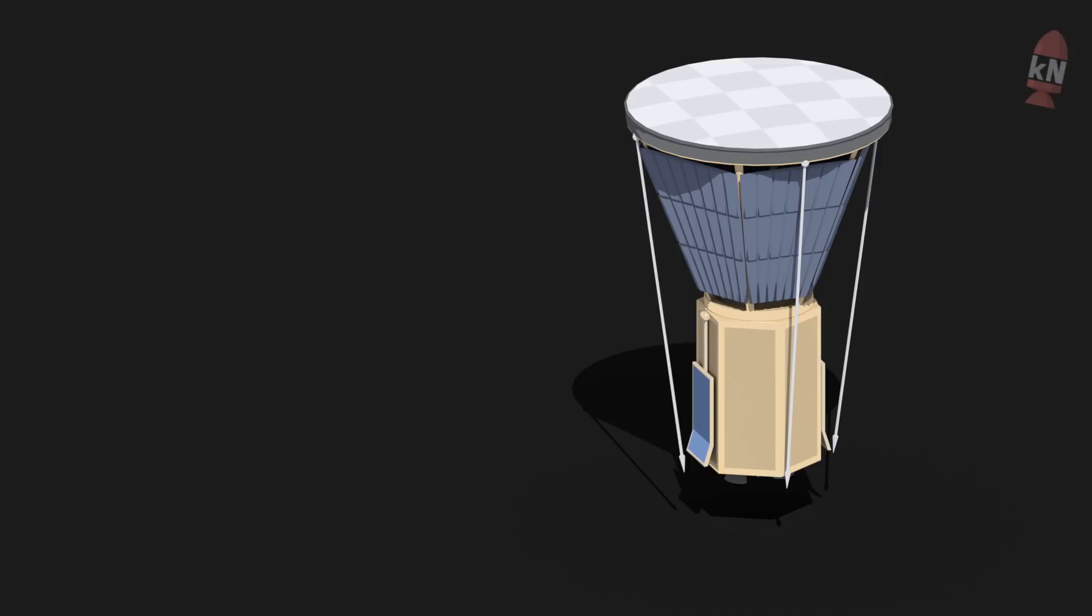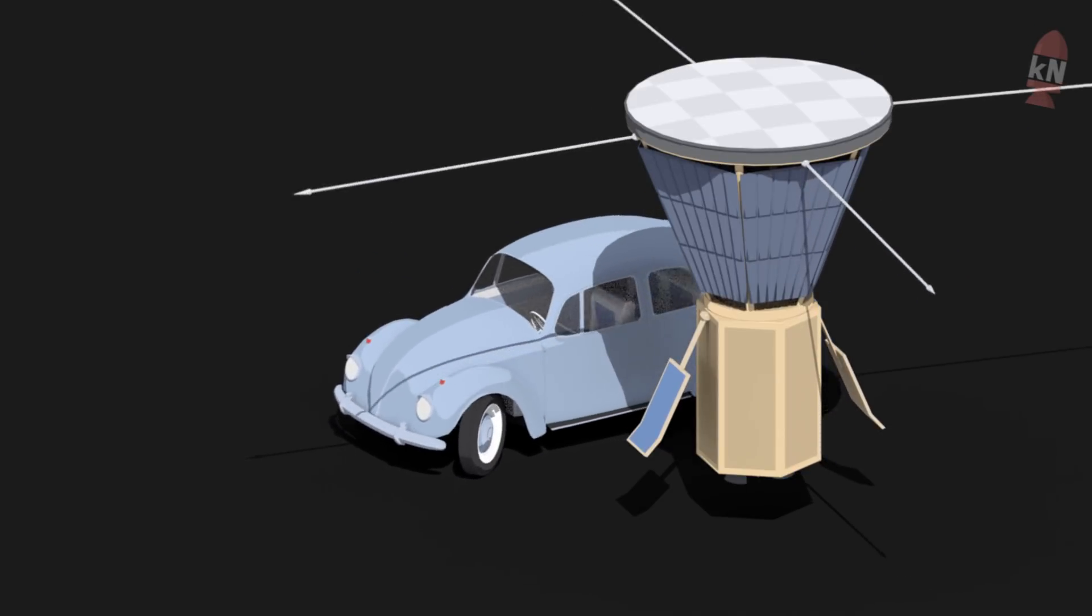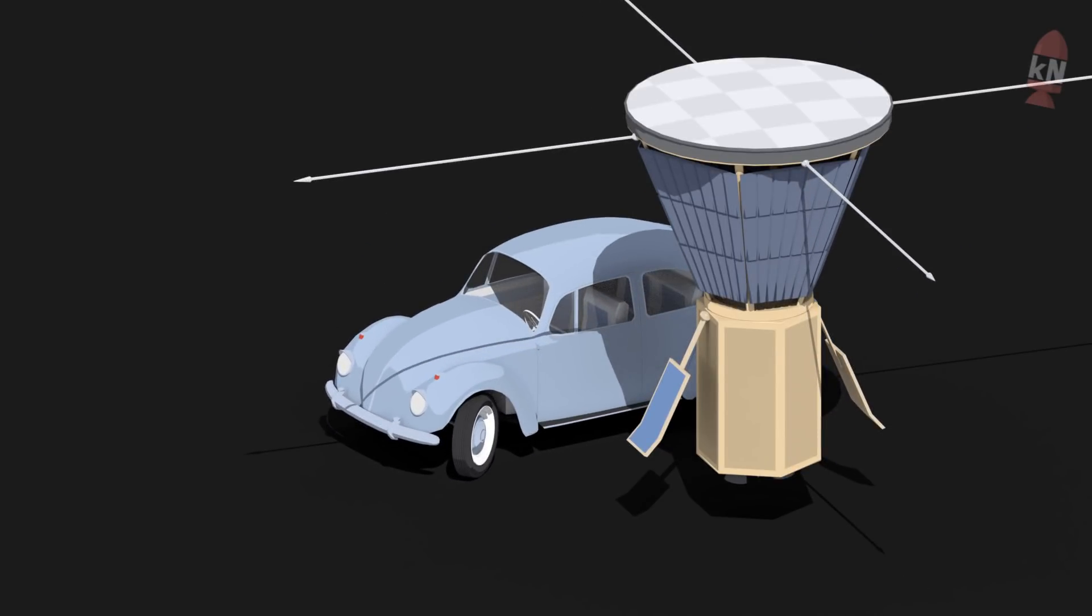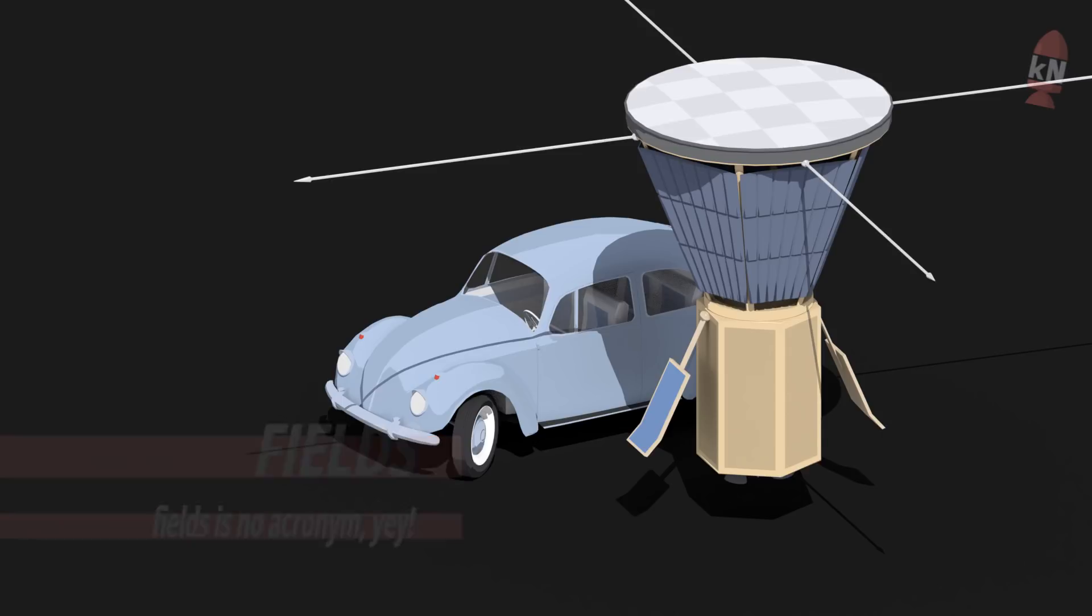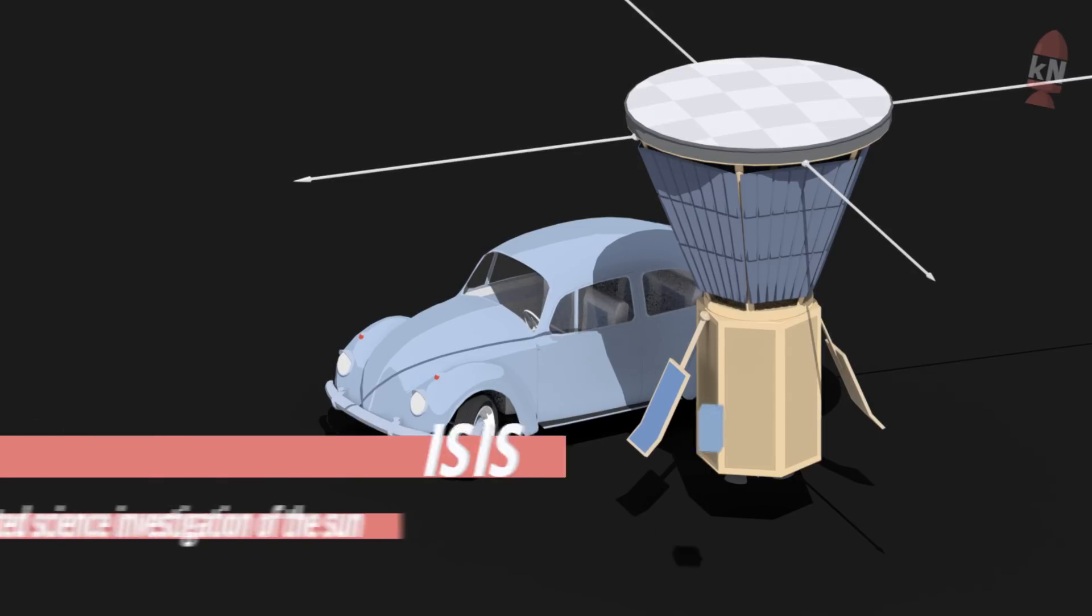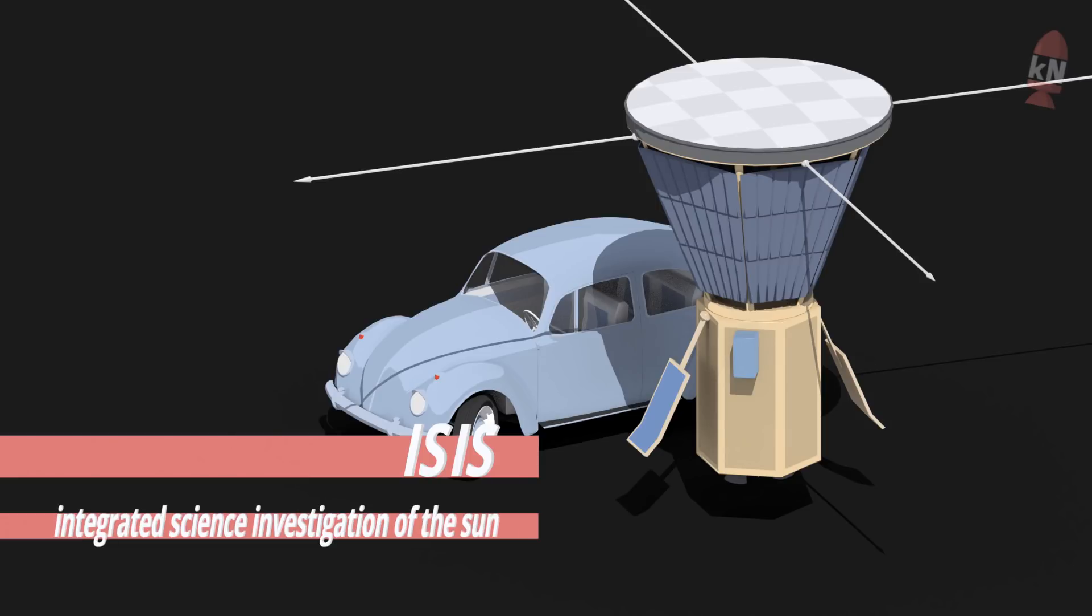To give you a little overview about what it is the shield protects, the instrumentation on board besides communication, computation, and energy systems consists of four major investigations, as they call it. First, the Fields Experiment. These are the antennas sticking out of the probe which will measure electromagnetic stuff like voltages, magnetic fields, and so on. Next is the Integrated Science Investigation of the Sun, or ISIS.